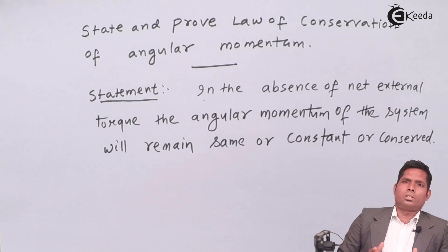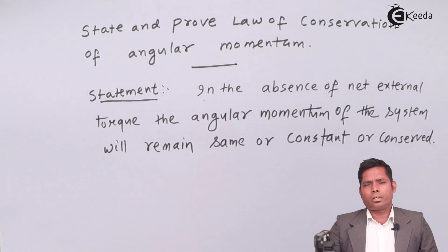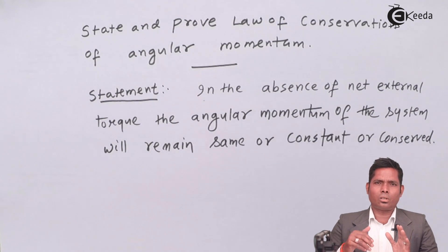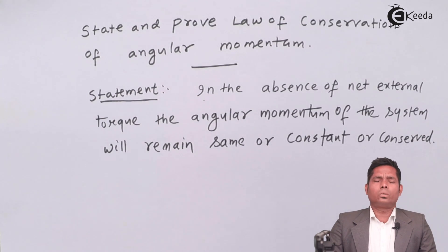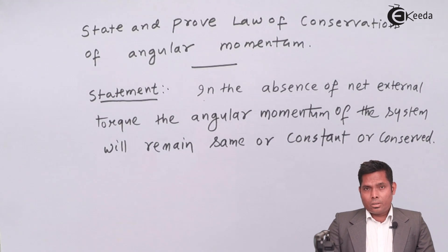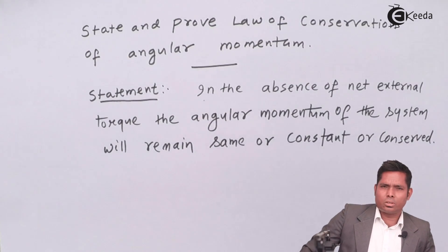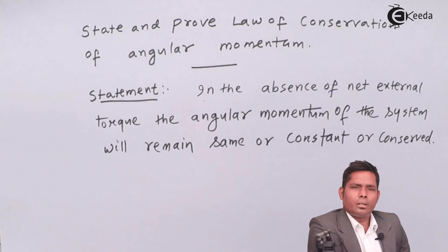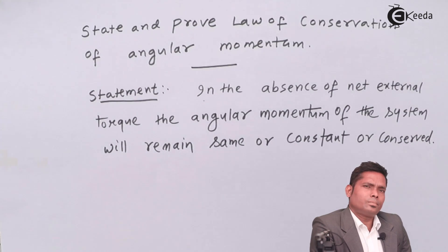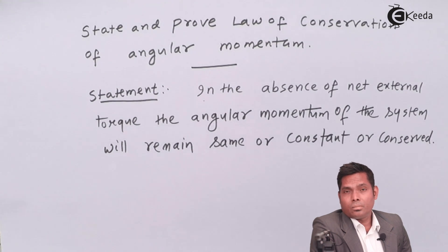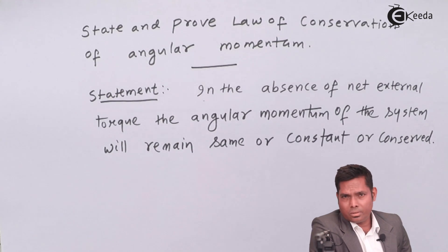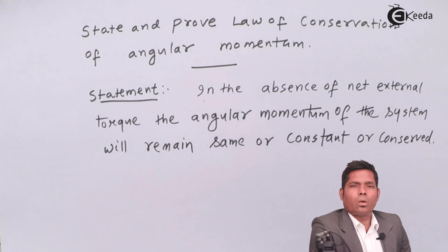If I is changing and ω is changing, but both change together, you can still have the product constant — because if one is increasing, the other has to decrease and the product remains constant. But in this case, since I is constant about the given axis, ω also has to remain constant about the same axis. To have ω constant, we need to see what influences ω. ω is influenced by α, that is angular acceleration.